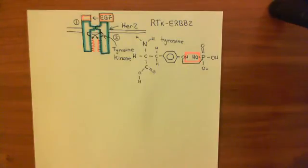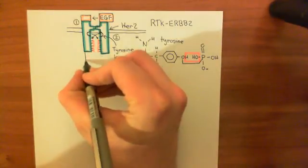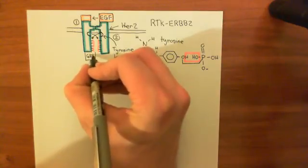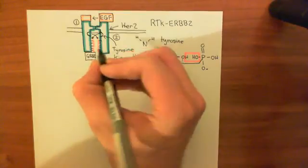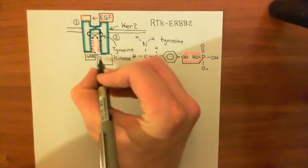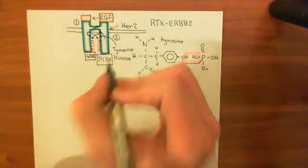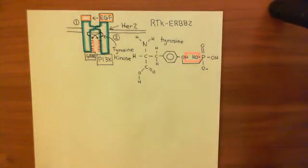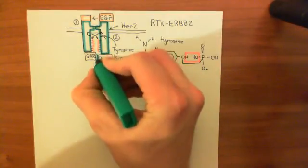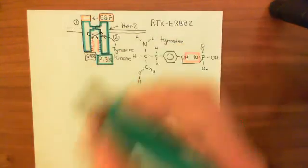Proteins can come and interact with these phosphorylated tyrosine residues. In this video, we're going to look at two proteins: firstly, a protein known as GRB2, and another protein known as PI3 kinase, denoted as PI3K. These are both going to lead to separate signalling pathways. We will discuss the pathway that GRB2 leads to before we discuss the pathway that PI3 kinase leads to — we'll come back to PI3 kinase later.